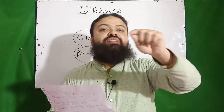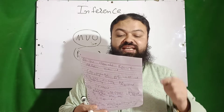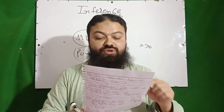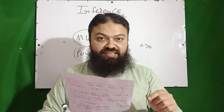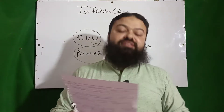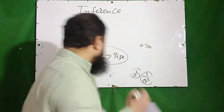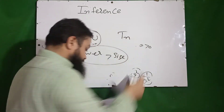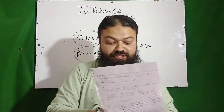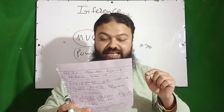Number thirteen: the denominator in the Cramér-Rao inequality is known as Fisher information. Number fourteen: if the variance of an estimator attains the Cramér-Rao lower bound, then the estimator is the most efficient estimator.